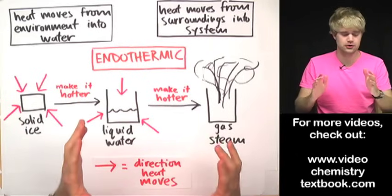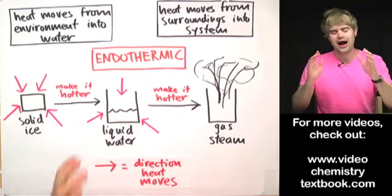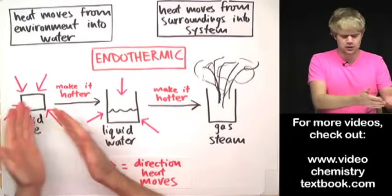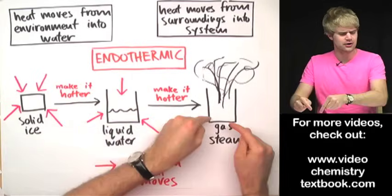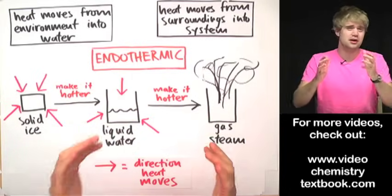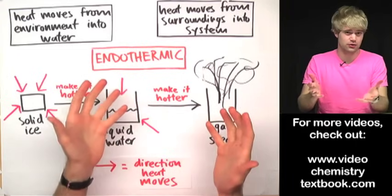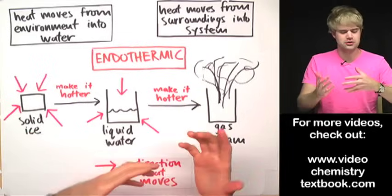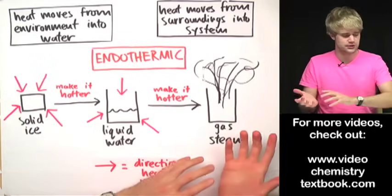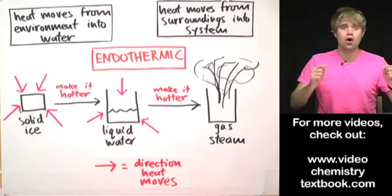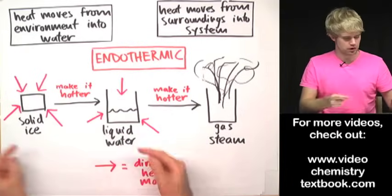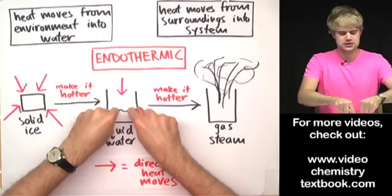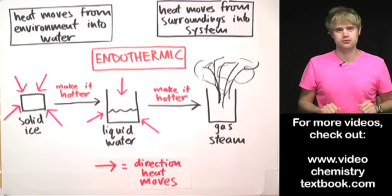Sometimes people get confused and think: wait, I thought an endothermic process was one that felt cold, and here we're talking about having to make stuff hotter — and somehow that's an endothermic process? Well, sometimes things that are endothermic feel cold, but sometimes they don't. Instead of thinking about whether something feels cold or hot, it's best to always think about the direction that heat moves and you'll never get this wrong. If heat is moving from the outside into something, it is an example of an endothermic process.